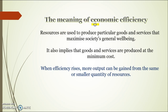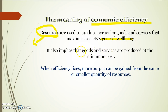Whenever you hear the word economic efficiency, basically what you need to be thinking about is that resources — so land, labour and capital — are used to produce the goods and services that maximise society's general wellbeing. It implies that goods and services are produced at the minimum cost, so we're producing things as productively as possible, but we're also producing the goods and services that are maximising society's wellbeing.